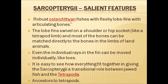That is why scientists are of the opinion that all tetrapods evolved from Sarcopterygii only. These lobe fins swivel on a shoulder or hip socket like a tetrapod limb. Our forelimbs and hind limbs have a ball-and-socket joint in our pectoral and pelvic girdles. Like this, the lobe fins of Sarcopterygii fishes also have a hip-like socket joint in the shoulders. The bones of these lobe fins are directly homologous to the bones of the limbs of land animals including human beings.